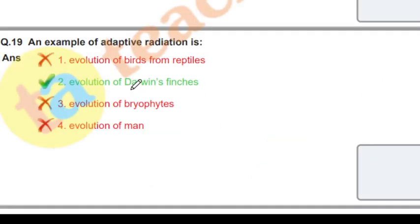What is an example of adaptive radiation? The right answer is evolution of Darwin's finches. This is a classic example of adaptive radiation, a question that appears frequently in exams.